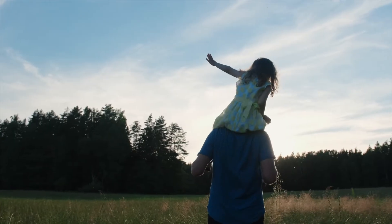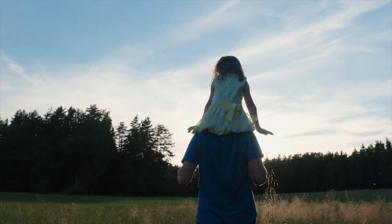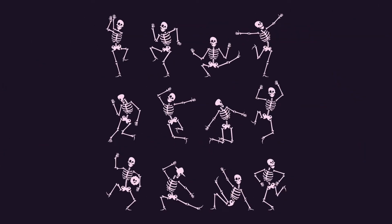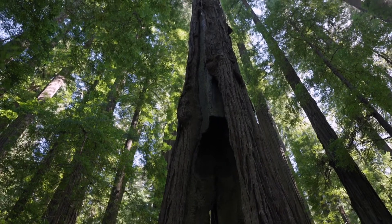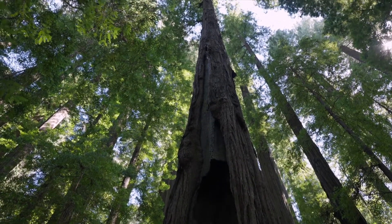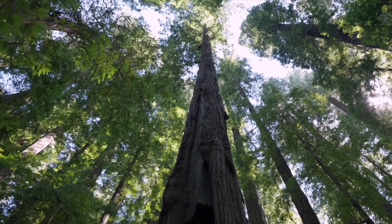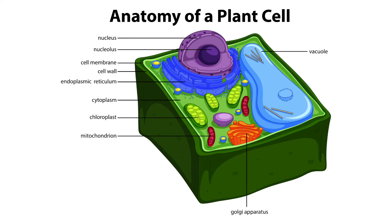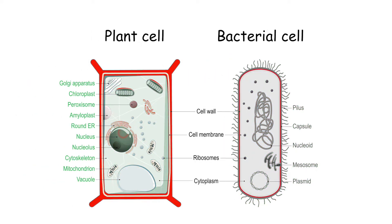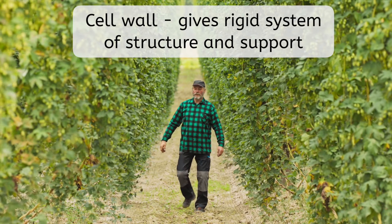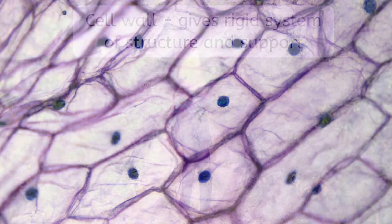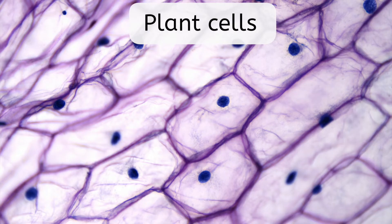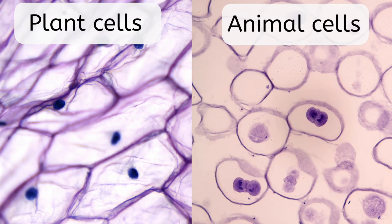How are you able to stand up tall without melting into a puddle of goo? Well, you have a skeleton, and it gives your body support. Plants don't have bones or a skeleton, and yet some can grow to be over 300 feet tall. So they must have another secret. It's actually an organelle you've learned before: the cell wall. Remember that most prokaryotic cells have cell walls, though animal cells do not. The cell wall sits outside the cell membrane, giving the cell a rigid system of structure and support. This is also why plant cells tend to be rectangular, or box-shaped, while most animal cells appear round or spherical.